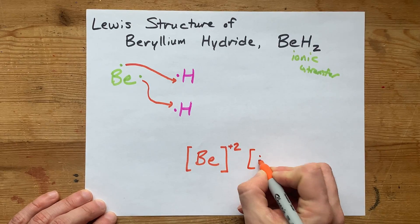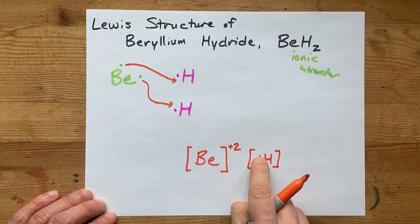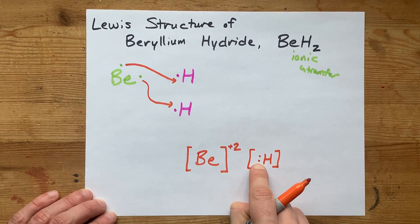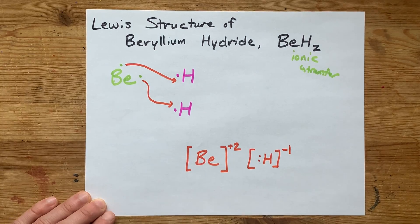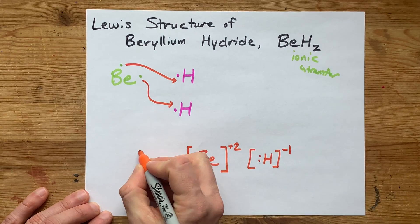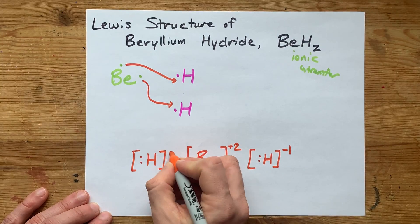And then we also have to draw these hydride anions, that's an H, with the one electron it brought and the one that it took from beryllium. And that's a minus 1 charge because it has an extra electron. And you have to draw two of them because you needed two hydrogens to accept both of the electrons.